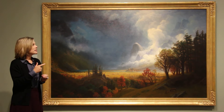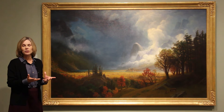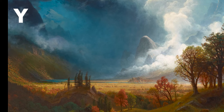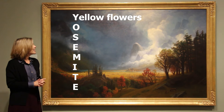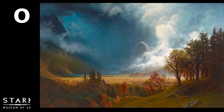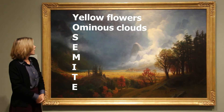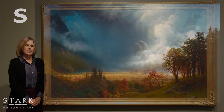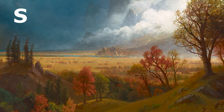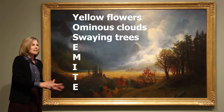The first letter we're looking for is Y. My eye is drawn to the yellow field of flowers — so maybe 'yellow flowers.' Then O — I can't ignore the ominous clouds. The whole sky is filled with clouds, and 'ominous' starts with O. For S, I see swaying trees. If you look at these trees very closely, you can feel the wind — those trees are being bent by something we can't see, so there's wind blowing through this valley.